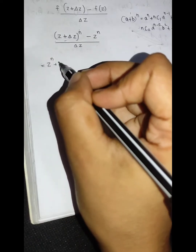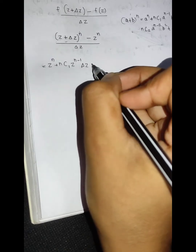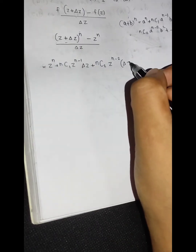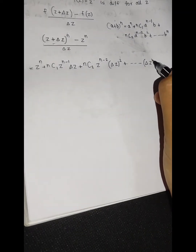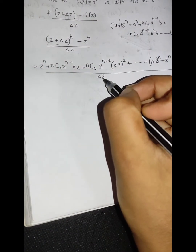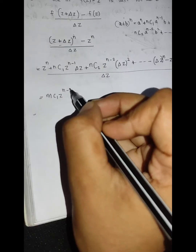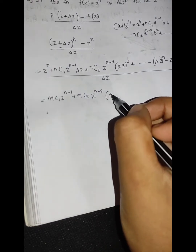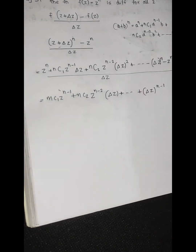z raised to n plus nC1 times z raised to n minus 1 times delta z, plus nC2 times z raised to n minus 2 times delta z squared, plus etc., plus delta z^n minus 1 times z raised to n minus 1, plus nC2 times z raised to n minus 1 times delta z raised to n minus 1.